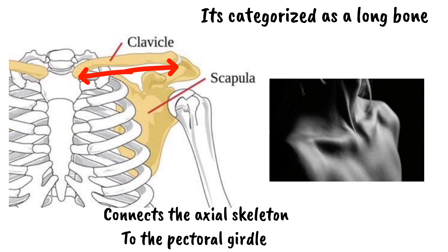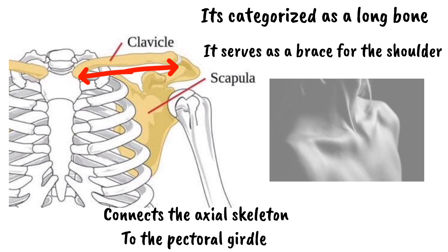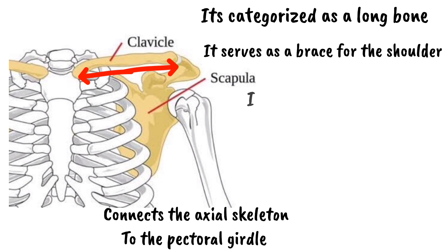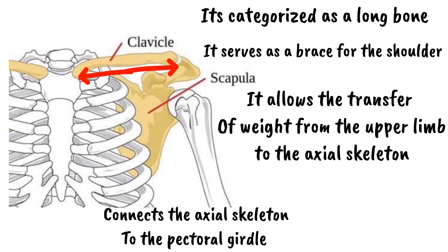The clavicle plays an essential role in everyday movement by acting as a brace for the shoulder. It also allows the transfer of weight from the upper limb to the axial skeleton. Due to its critical roles, injury to the clavicle can significantly impair your daily activities.